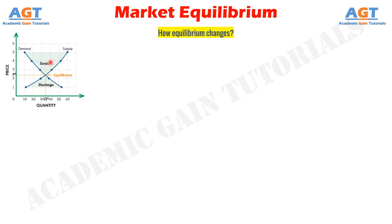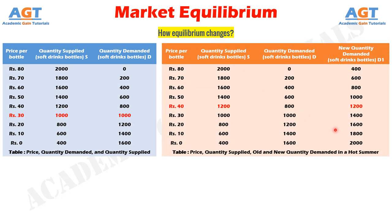Let's look at an example of changes in equilibrium. If there is a particularly hot summer, students may prefer to drink more soft drinks at all prices, as indicated in the new demand schedule. At the higher level of demand, keeping the price at ₹30 would lead to an excess of demand over supply, with demand at 1,400 and supply at 1,000 — an excess of 400. This will act as an incentive for the seller to raise the price to ₹40, and equilibrium will be re-established at the higher price.